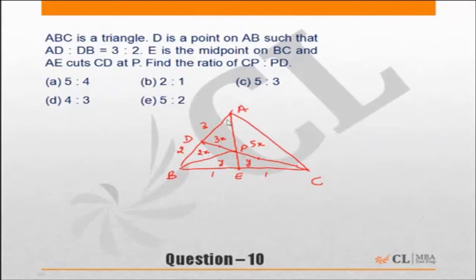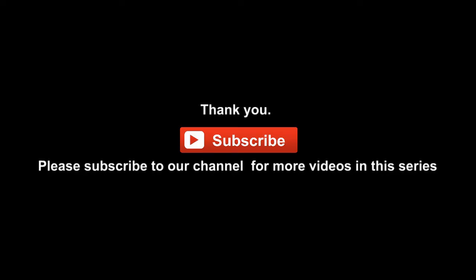Now if I see triangle ADC, if AP divides the area in ratio 3X to 5X, then the opposite side must also be in that ratio. So CP:PD must be 5X to 3X, which is 5:3.